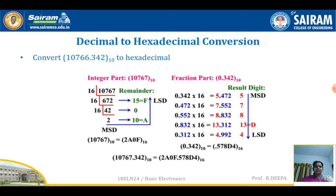For the fractional part, you have to multiply by 16 and identify at least 5 decimal places. Take the given fractional part, multiply by 16, and you get 5.472. Record the integer part 5 on the right hand side. Take the remaining fractional part 0.472, multiply by 16, and record the integer part. Keep multiplying until you get 0 or at least 5 times. While writing the hexadecimal number, take data from top to bottom — that is MSB to LSB — giving 578D4.